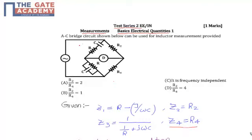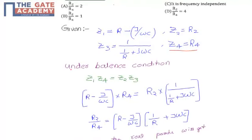Under balance condition, the value of the AC bridge circuit becomes: the value of these impedances, Z1·Z4 equals Z2·Z3. This is the under balanced condition.